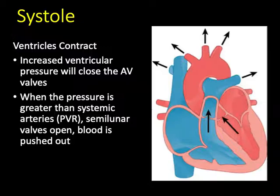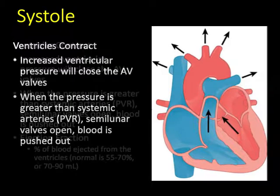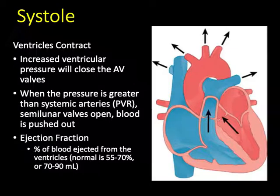Afterload is the pressure that must be overcome to create cardiac output. When those ventricles contract, not all of the blood moves forward — it's just not that efficient a pump. In a normal healthy heart, about 55% to 70% of the blood in the ventricle is pumped out with each contraction, equivalent to roughly 70 to 90 milliliters in an average adult. This ejection fraction is one of the measurements we look at in patients with congestive heart failure or cardiac myopathies.